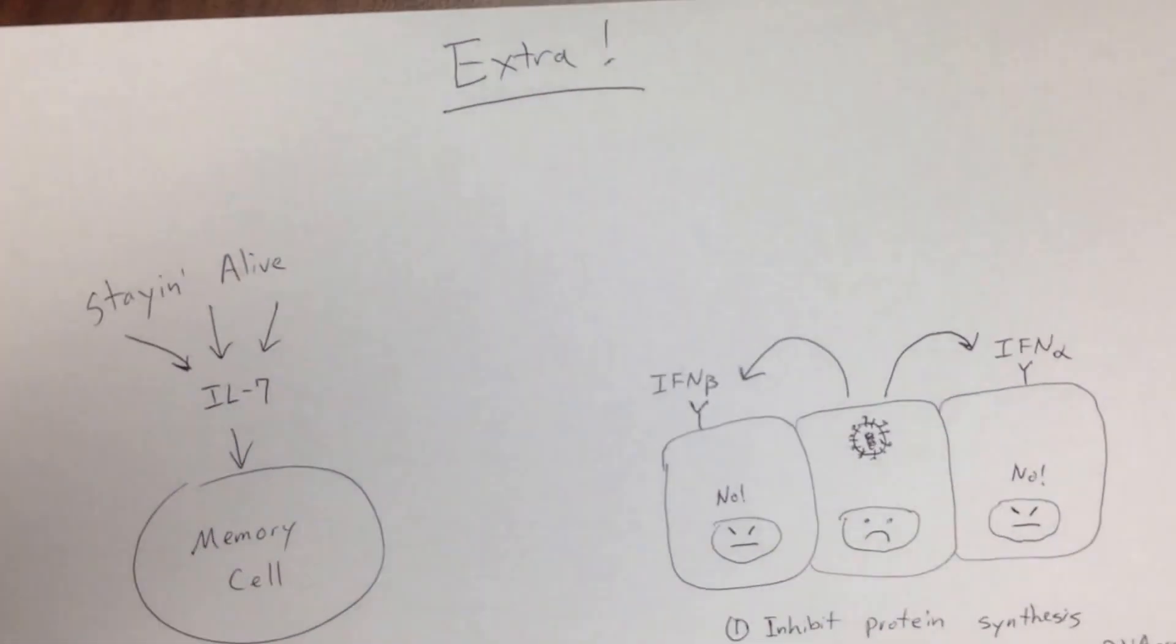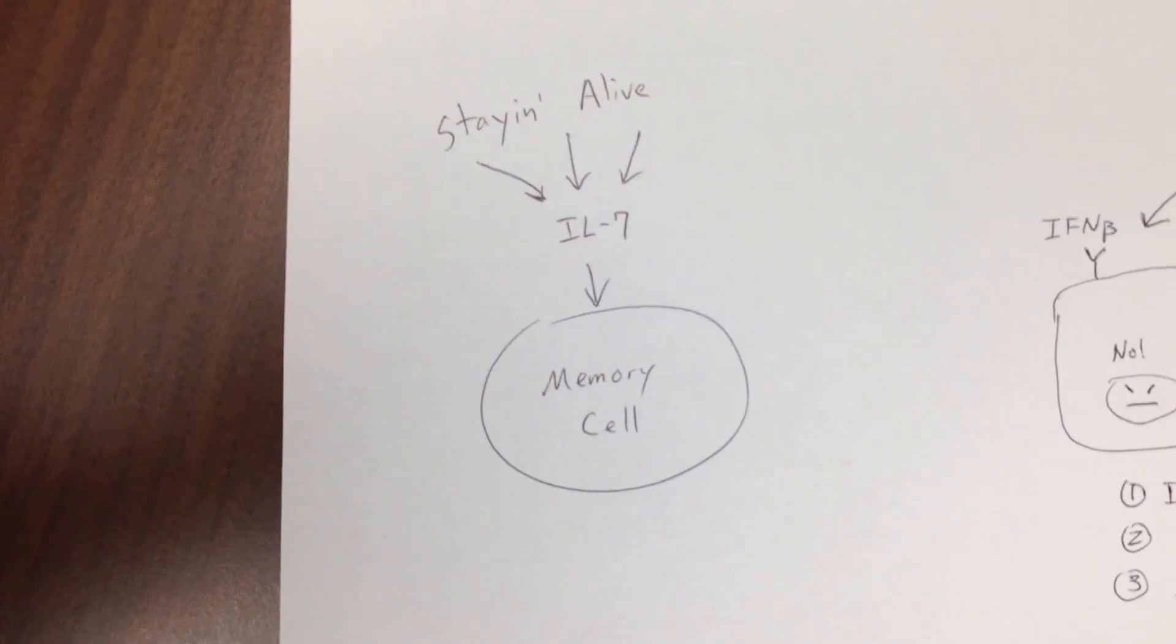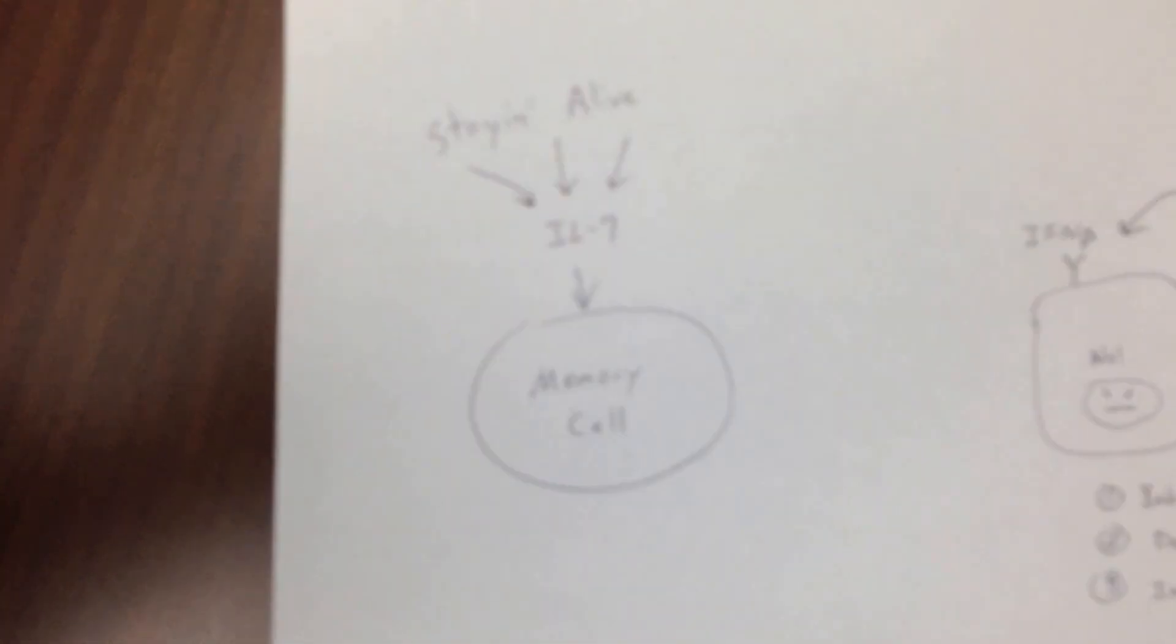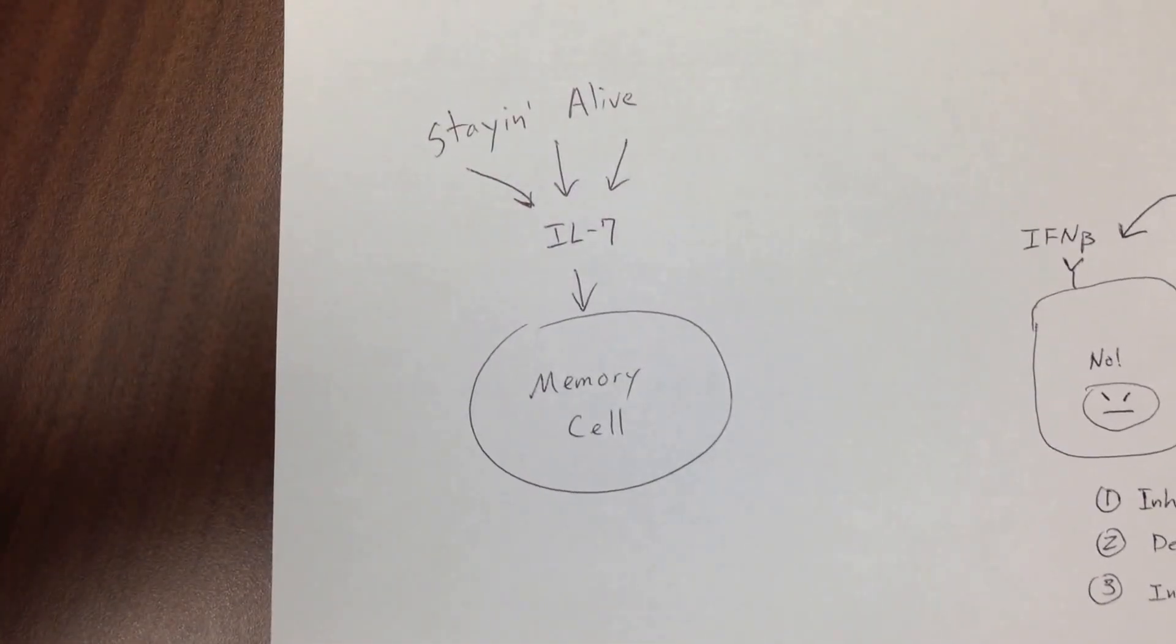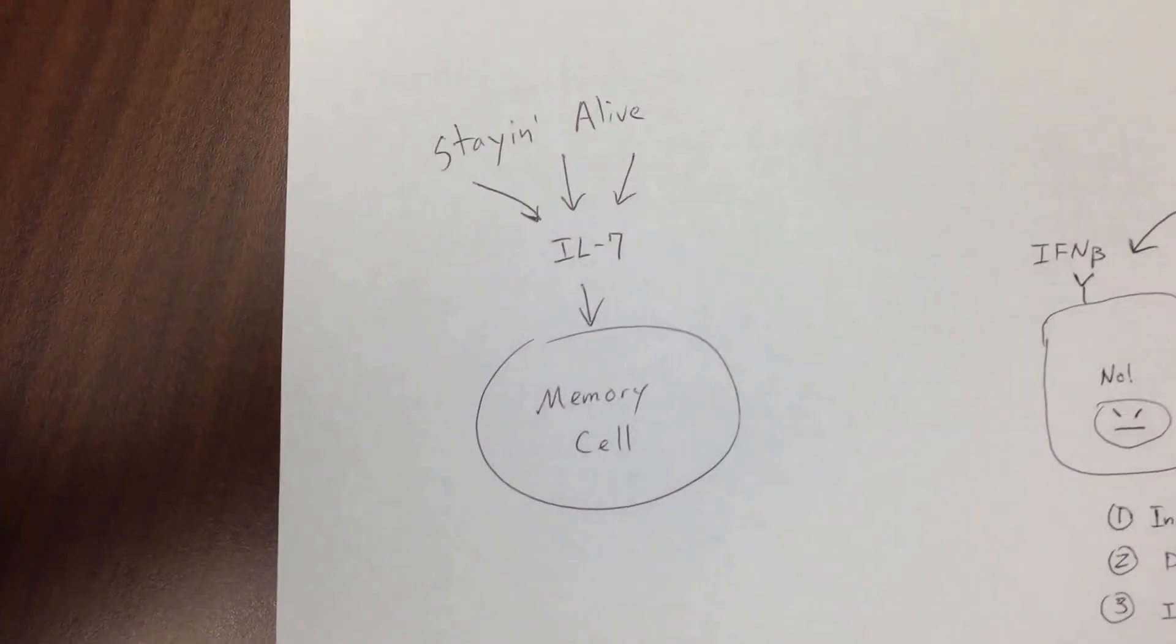This is the extra page. So we also have IL-7, and pretty much it just tells memory cells to stay alive. So memory cells wouldn't last very long unless they were told to stay alive, and that's what IL-7 does.